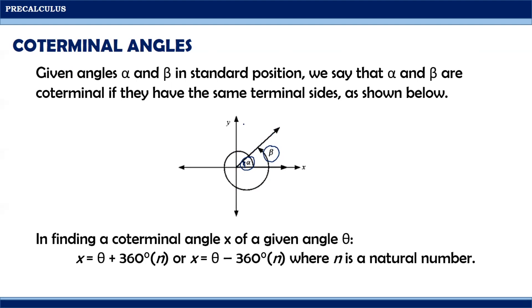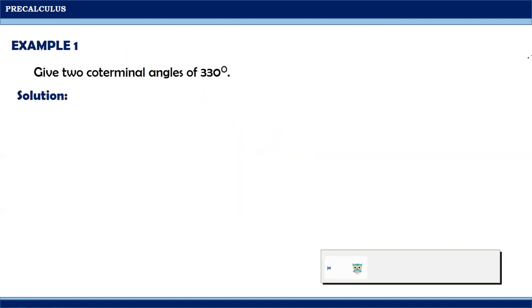In finding a coterminal angle x of a given angle theta, x is equal to theta plus 360 degrees times n, or x equals theta minus 360 degrees times n, where n is a natural number. Let us consider this example.